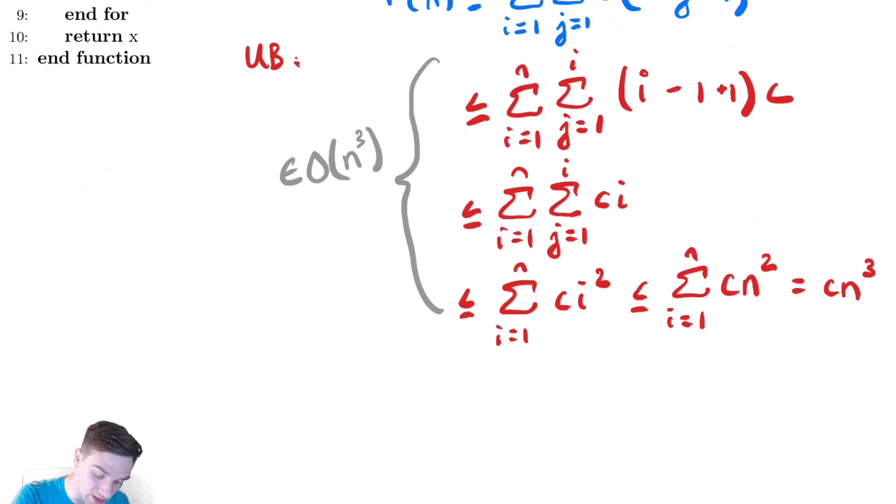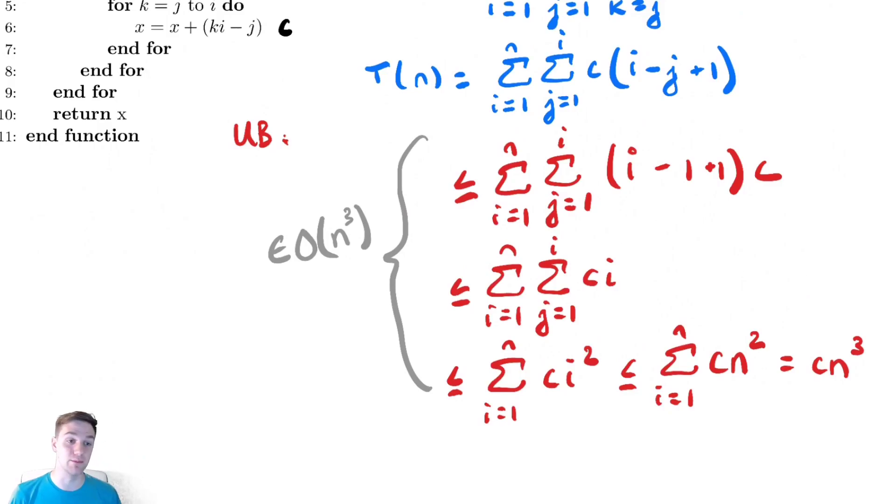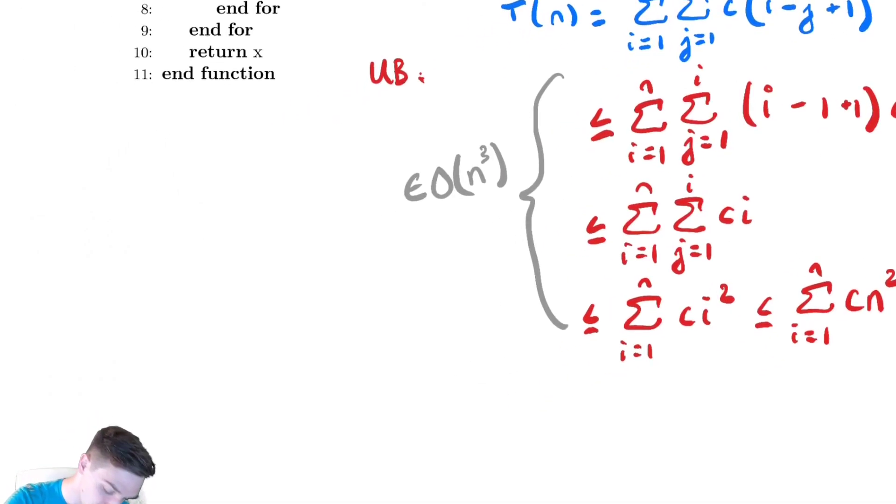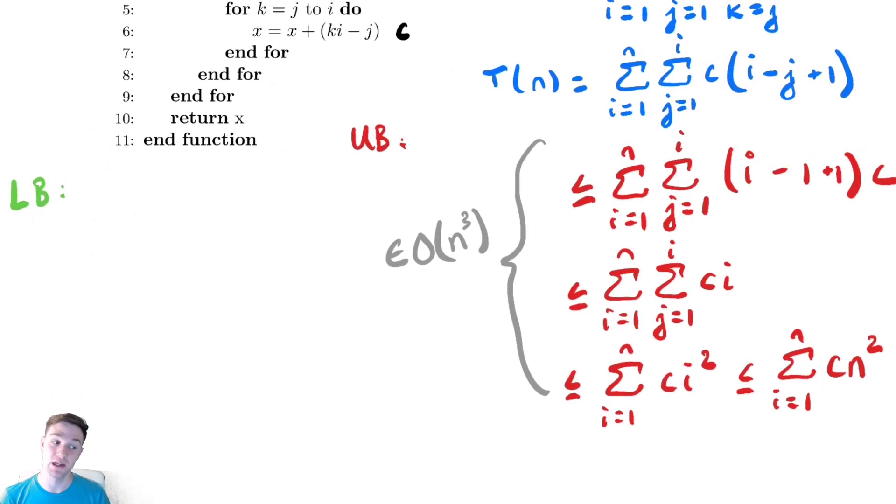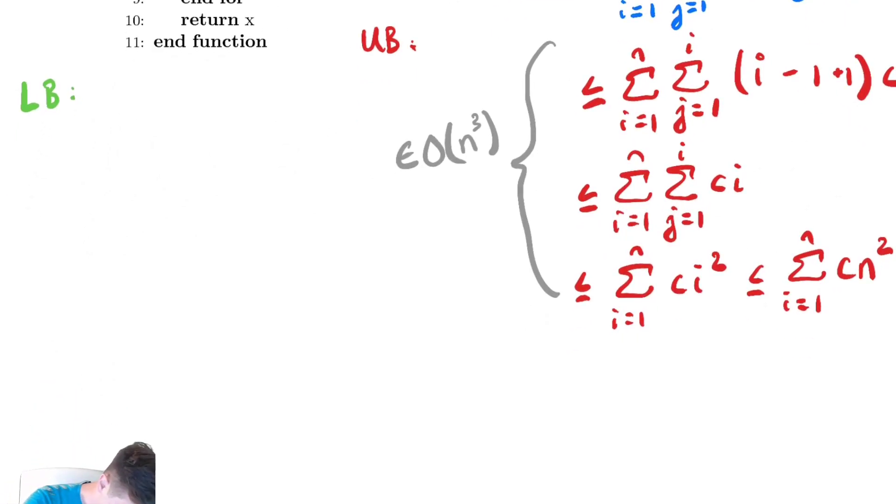Now we should also bound this below. We need to be careful when bounding below. I'm going to do this a bit slowly to make sure we see what's happening. So we're going to lower bound it. I'm going to begin by splitting that j summation in half and seeing where that leads me. So t of n equals the sum from i equals 1 to n of the sum from j equals 1 to i over 2 of c times i minus j plus 1 plus the sum from j equals i over 2 plus 1 to i of c times i minus j plus 1.